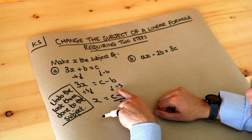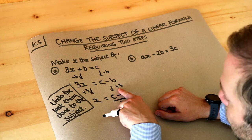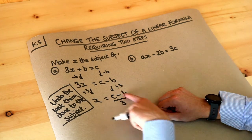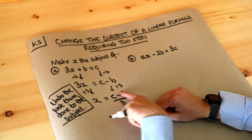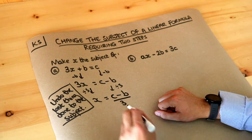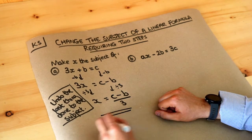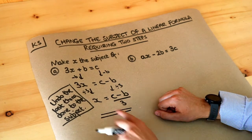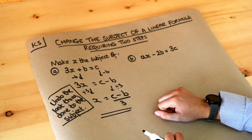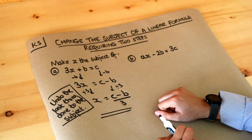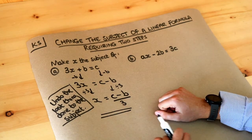Avoid use of the divide symbol in algebra — you shouldn't have the divide symbol in your answer. And that's the final answer because x is on its own on one side of the equation, so it's the subject.